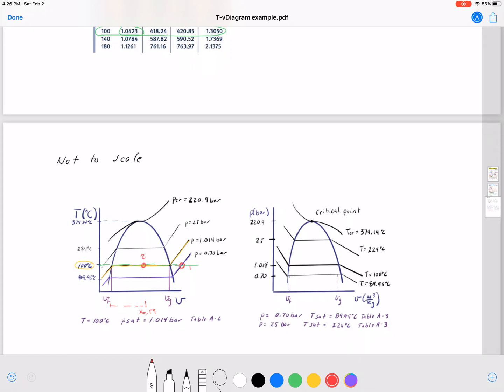And then the last one where we're 25 bar and 100 degrees Celsius coincide here, so those are our three states. Likewise on our pressure specific volume, we have the same thing where we are at different pressures. We're all at 100 degrees Celsius, so we're along this line somewhere for all three of these states.